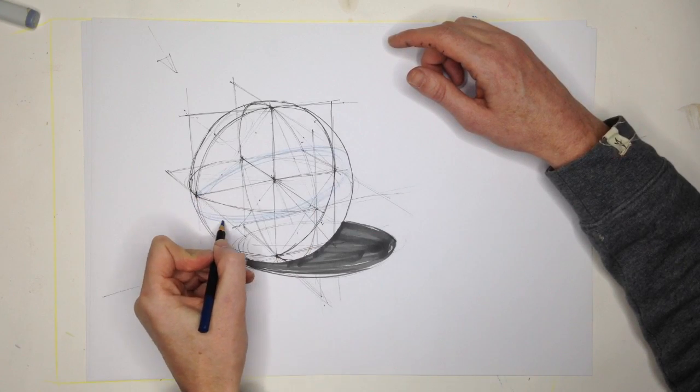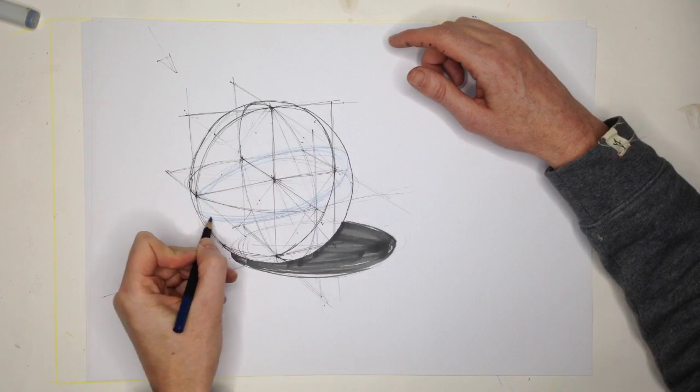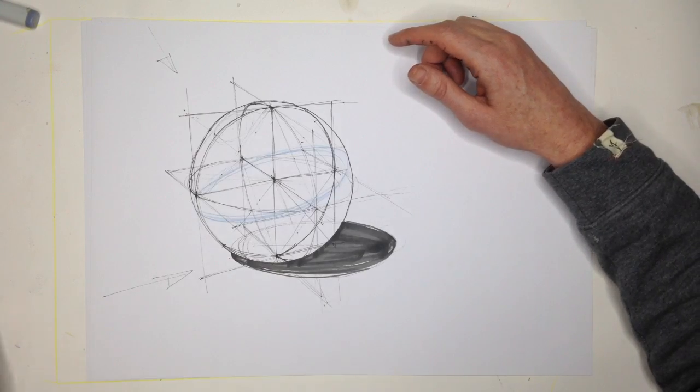So if I draw an ellipse, tilt an ellipse here, then it's going to give me the line where the actual shadow starts.